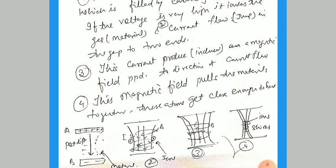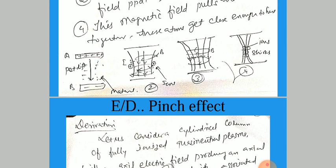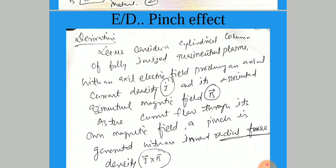The current produces a magnetic field, and the magnetic field pulls the material together — these atoms get closer to each other. The tube shrinks between the plates, and on the top and bottom there will be higher area. This is the Pinch Effect, and this is the mechanism of the Pinch Effect in plasma or any fusion material. It is also used for the confinement of the plasma.